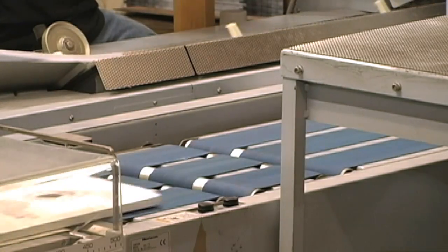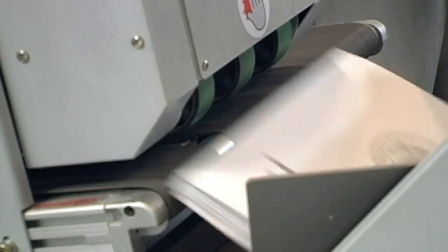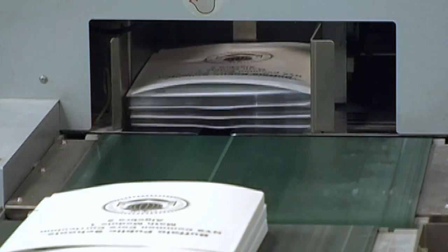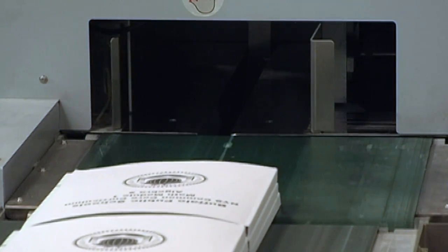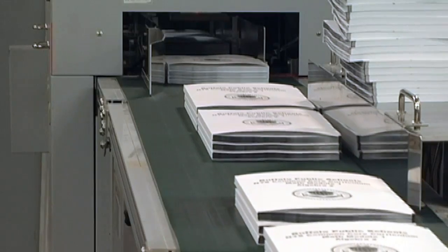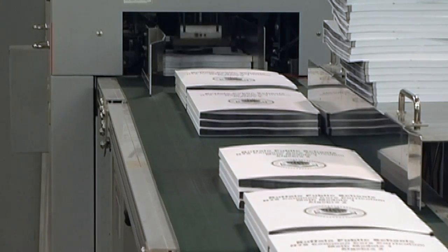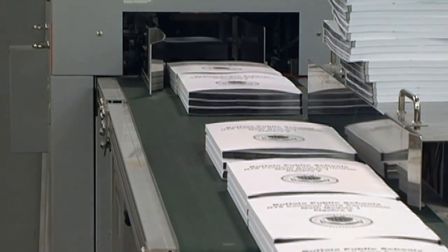Once the covers have adhered to the interior, the book travels to the accumulator, then to the conveyor, which feeds one of our 3-knife trimming stations where the perfect bound books are trimmed to their final size. We are comfortable perfect binding from eighth of an inch to two and a half inch.